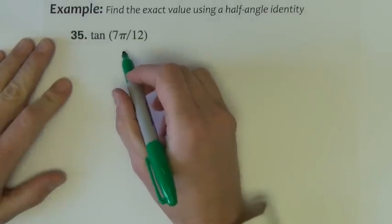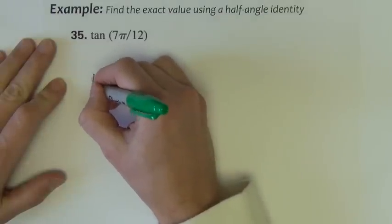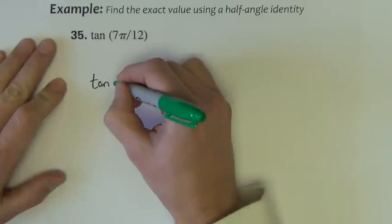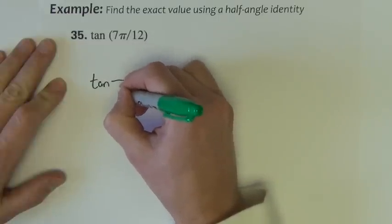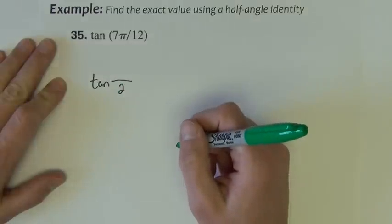Tangent of 7 pi over 12, and you just start it the same way. Tangent of something divided by 2, which is 7 pi over 12.